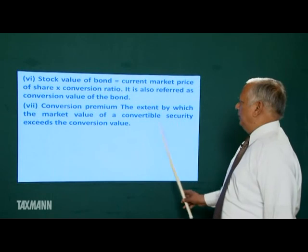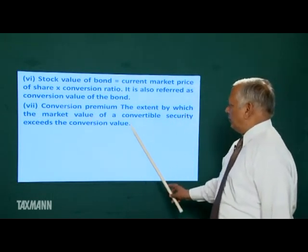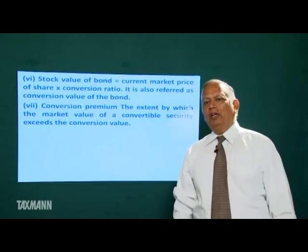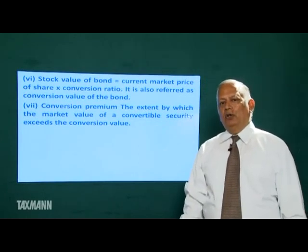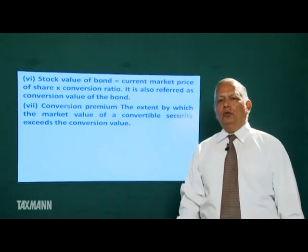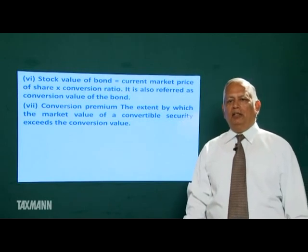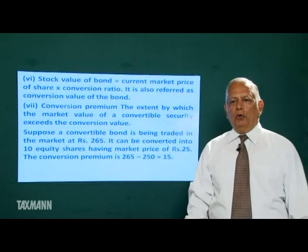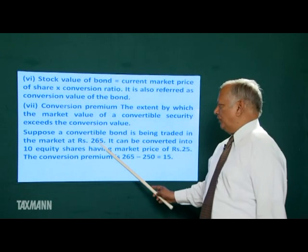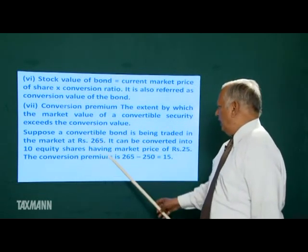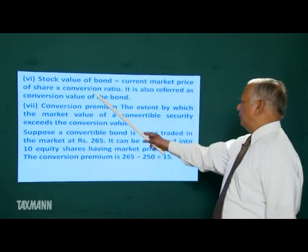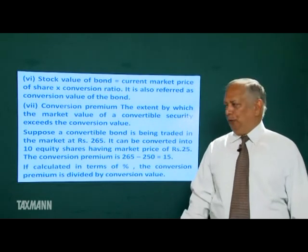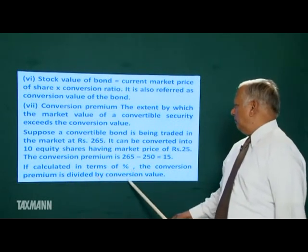Conversion premium is the amount by which the market value of a convertible security exceeds its conversion value. For example, a bond convertible into 10 equity shares with a market price of Rs. 20 per share has a conversion value of Rs. 200. If the bond is trading at Rs. 205, then Rs. 5 is the conversion premium. In another example, a convertible bond trading at Rs. 265, convertible into 10 shares at Rs. 25 each, has a conversion value of Rs. 250, so the conversion premium is Rs. 15. If calculated as a percentage, the conversion premium is divided by the conversion value.